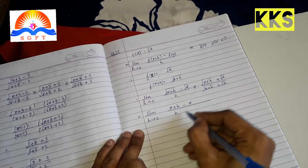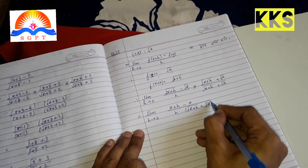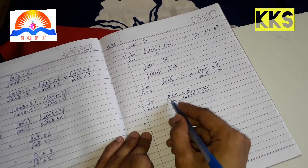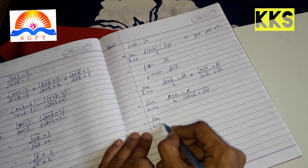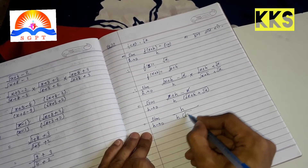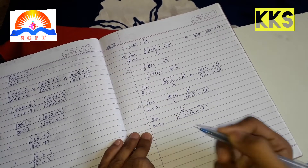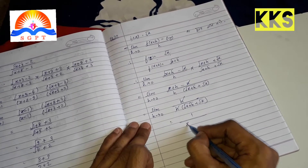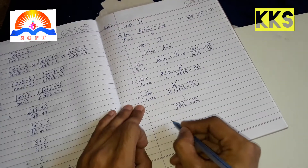Limit h→0 अब root × root multiply होता है तो root हट जाएगा। ऊपर हमारे पास x+h - x मिलेगा, नीचे √(x+h) + √x रहेगा। x - x = 0 हो जाएगा, तो ऊपर सिर्फ h बचेगा। फिर h/h cut हो जाएगा, ऊपर 1 बचेगा और नीचे √(x+h) + √x।